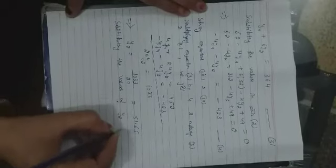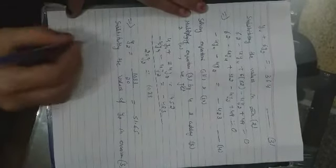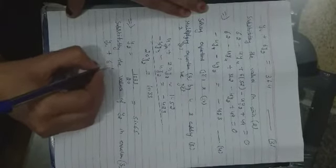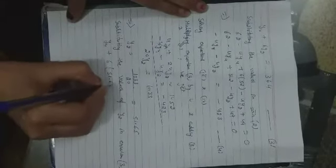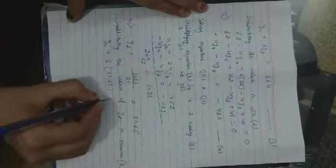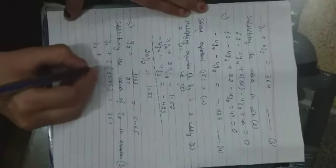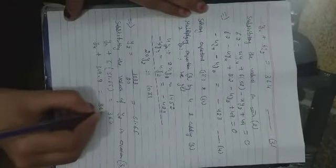Now substituting the value of y2 in equation 3. That is y4 plus 6 times 51.65, the third equation is equal to 364. So y4 plus 309.9 is equal to 364.